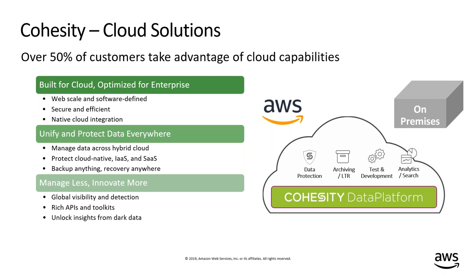The goal of most organizations today is to spend less time managing infrastructure and more time on transformation and innovation. We allow you to manage less and innovate more — whether it's having a global SaaS-based UI to manage your platforms across AWS, hybrid, and on-premises, or providing rich APIs and toolkits to give developers and DevOps direct access to data to automate the process of making data available and spinning up systems for test-dev environments.